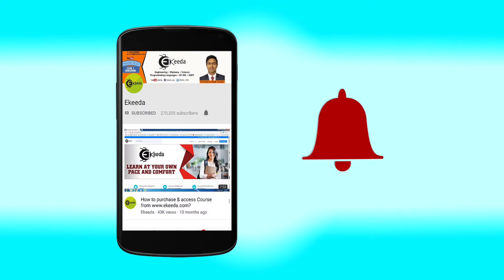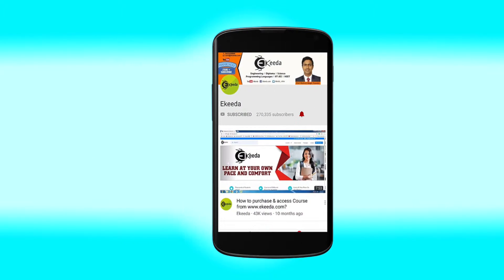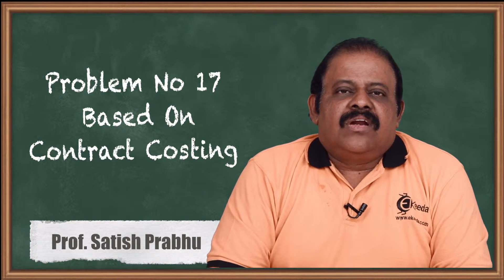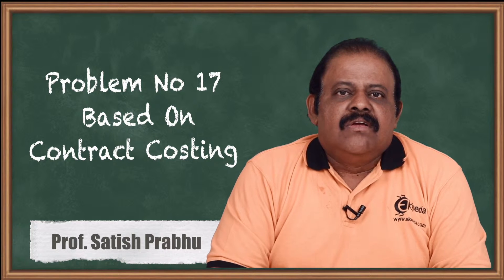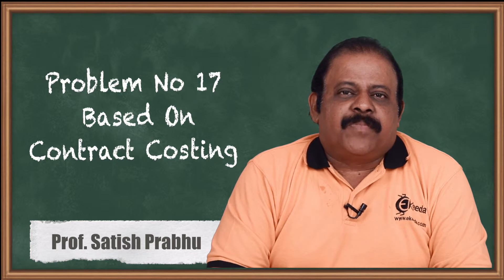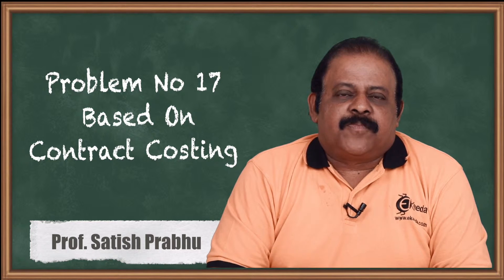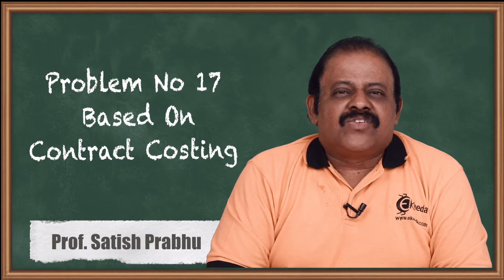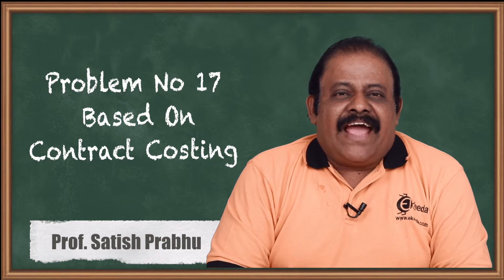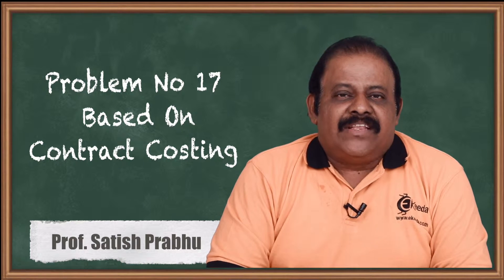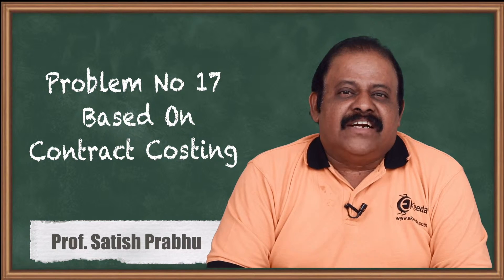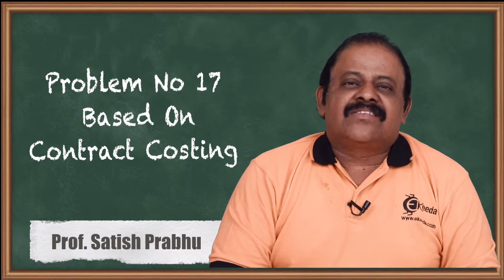Hello friends, we have learned how to prepare an estimated contract account or total contract account, where in a question we have information about actual expenditure and estimated expenditure. Estimated expenditure are based on some estimation or expectation, and there is a possibility that actual expenditure may be more or less than expected. We will be studying how provision is made to adjust that probable difference.